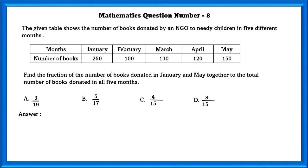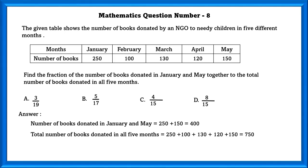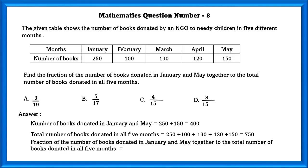Mathematics Question Number 8: The given table shows the number of books donated by an NGO to needy children in 5 different months. Find the fraction of number of books donated in January and May together to the total number of books donated in all 5 months. Number of books donated in January and May is equal to 400 books. Total number of books donated in all 5 months is equal to 750. If we write this in fractional form, we will get 400 by 750. They have given the answer as equivalent fraction. So we have to find the equivalent fraction of 400 by 750. Equivalent fraction of 400 by 750 is 8 by 15.